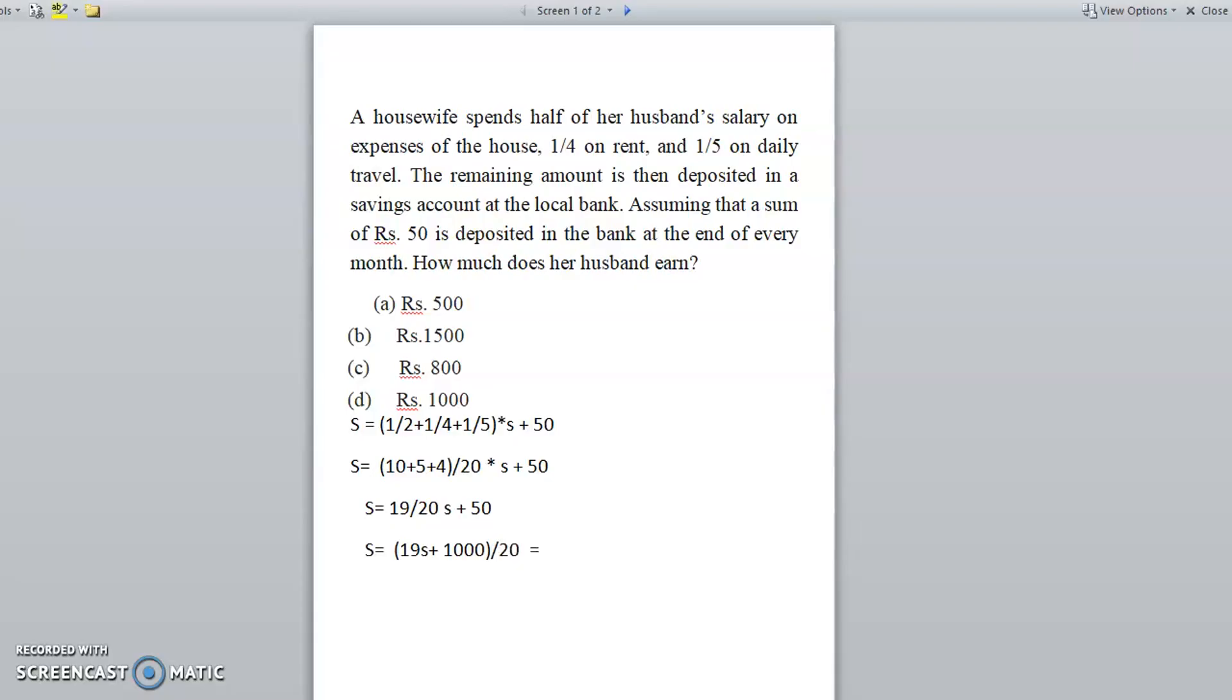Okay, now if the 20 comes in the left side, it will become 20S is equal to 19S plus 1000. Now if we take this 19S in the left side, so 20S minus 19S is equal to 1000. So that means,